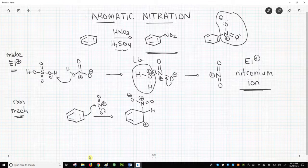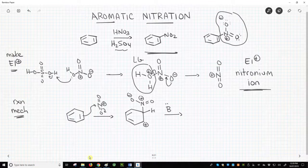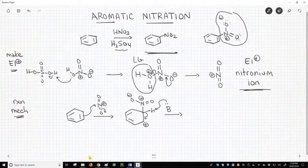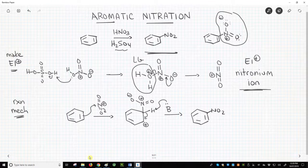To remake our pi bond, we need a base. That's a problem in a reaction that's full of strong acids. Again, we will use our friend B. With a lone pair, it attacks, reforms our pi bond, and we have our nitrated ring.